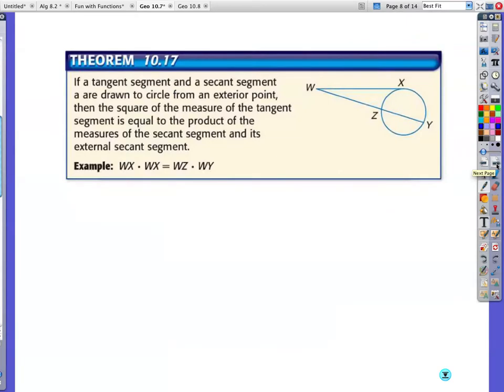This looks similar. We have a tangent and a secant. I am going to use the same terminology. The outside times the full length is equal to the outside times the full length. The outside is Wx. The full length of this is Wx is equal to the outside, which is Wz, times the full length, which is Wy. That's what it is.